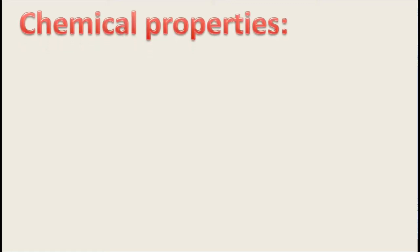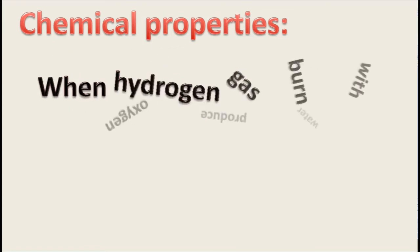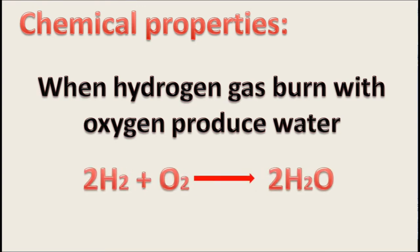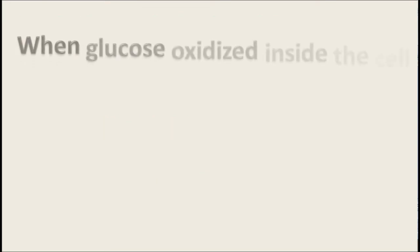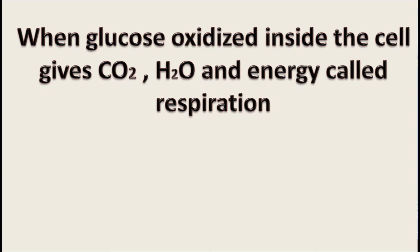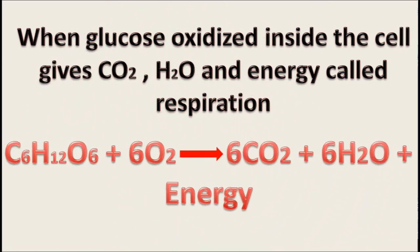Chemical properties of oxygen: when hydrogen gas bonds with oxygen, water is produced. Two molecules of hydrogen combined with one molecule of oxygen give two molecules of water. When glucose oxidizes inside the cell in the presence of oxygen, it gives carbon dioxide, water, and energy — this process is called respiration. One glucose molecule reacts with six molecules of oxygen to give six molecules of carbon dioxide, six molecules of water, and energy.